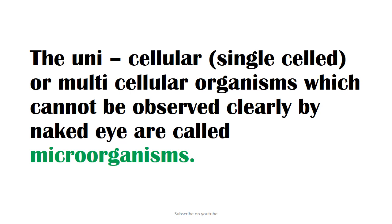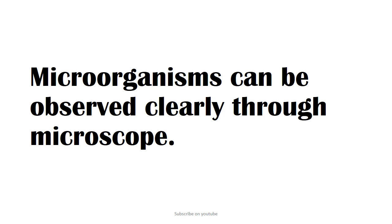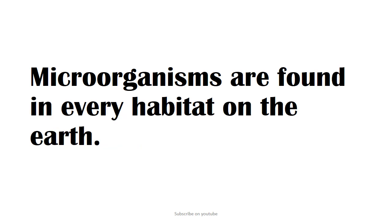Unicellular — that means single-cell microorganisms — or multicellular organisms which cannot be observed clearly by the naked eye are called microorganisms. What do you mean by microorganisms? The unicellular or multicellular organisms which cannot be observed clearly by the naked eye. These microorganisms can also be called microbes.